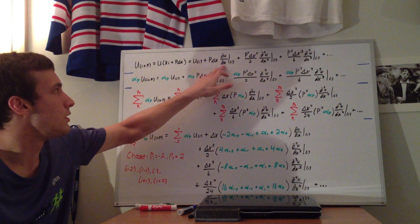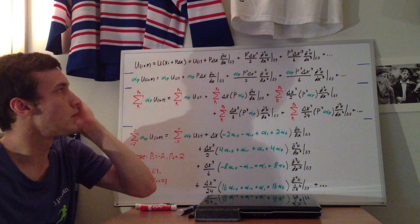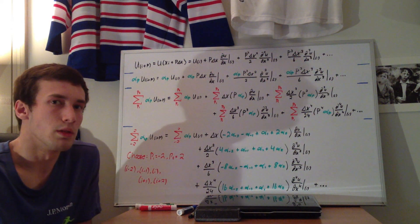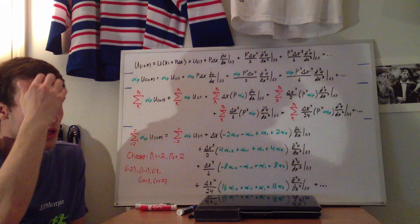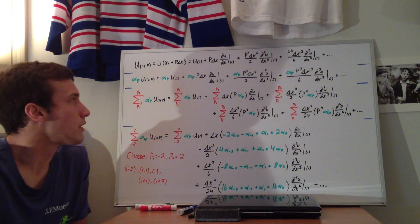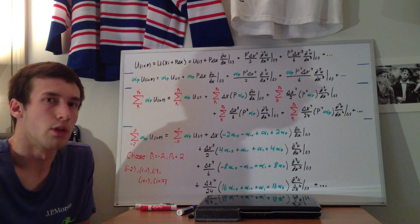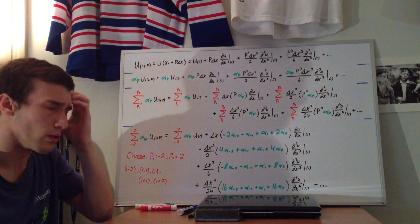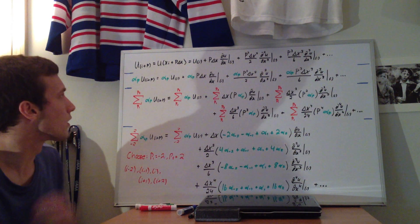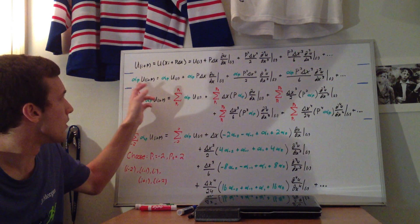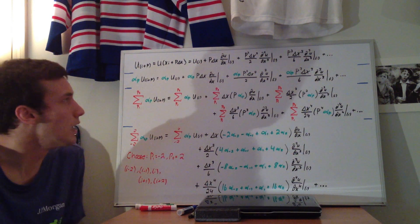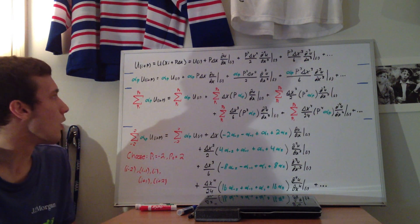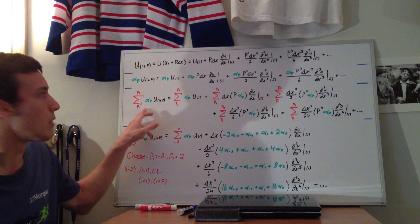So we'll have the p·Δx (du/dx) at point i, plus p²·Δx²/2, and so on and so forth. What we can do — and some of these steps might not be completely clear until we get down to the bottom, so just bear with me — we're going to multiply both sides by some coefficient α_p. I try to color code it so it's easier for you guys to follow along. I just multiplied every single term by α_p.